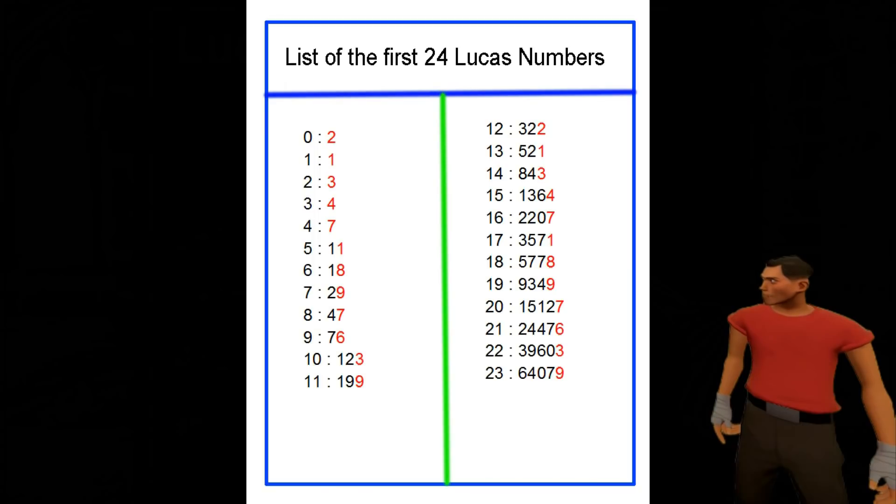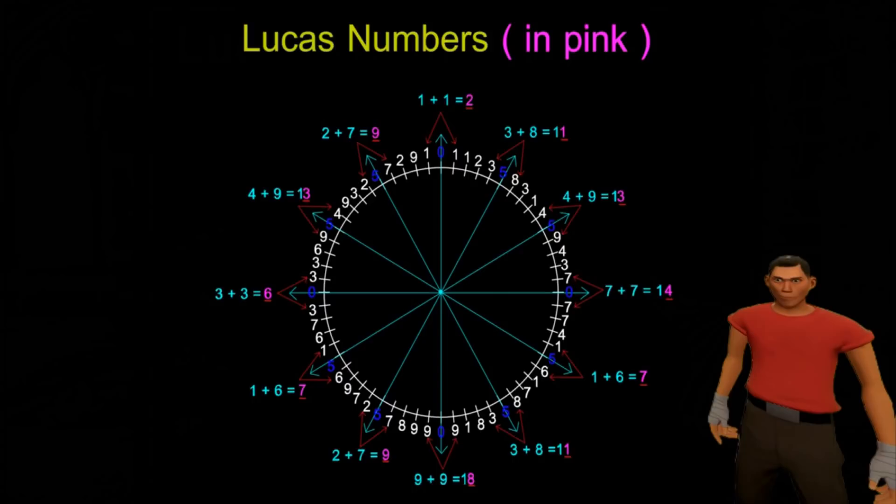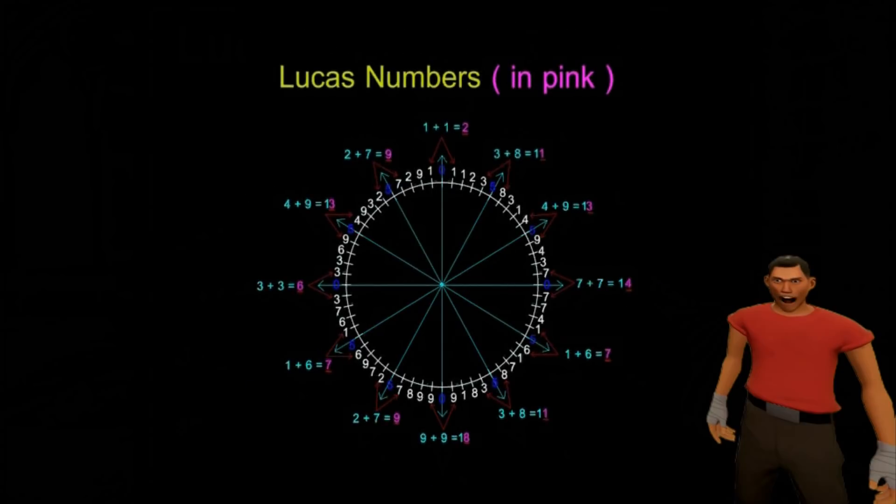Here is a list of the first 24 numbers in the Lucas series. As you can see, the last numbers form a pattern that starts to repeat after the first 12. And if we look at our Fibonacci cipher, the 12 Lucas numbers are magically encoded into the cipher.